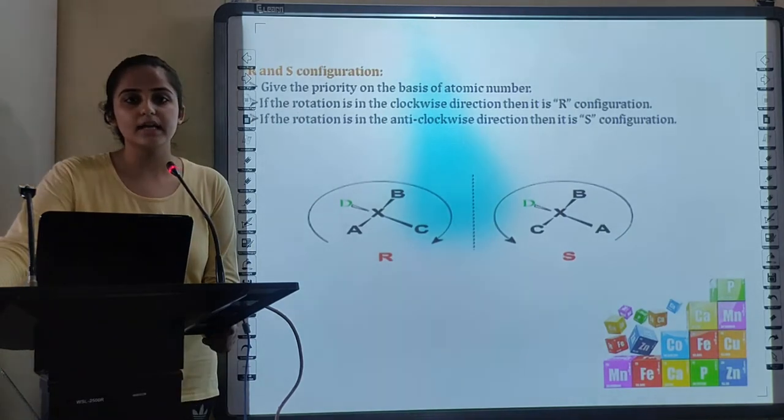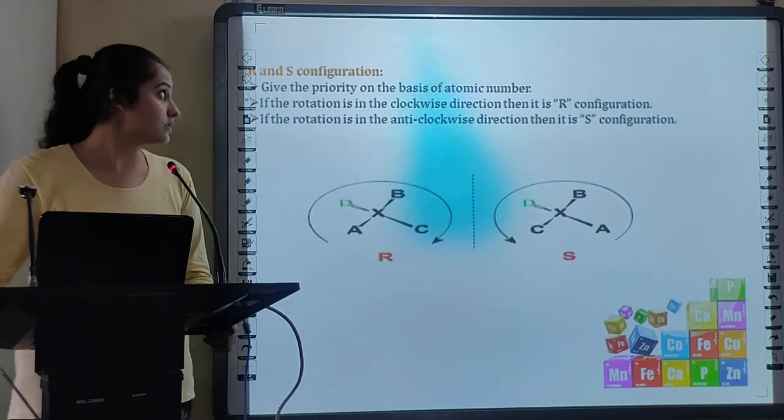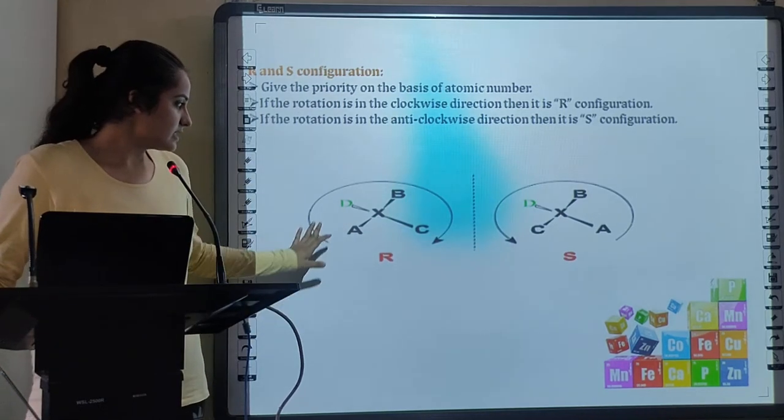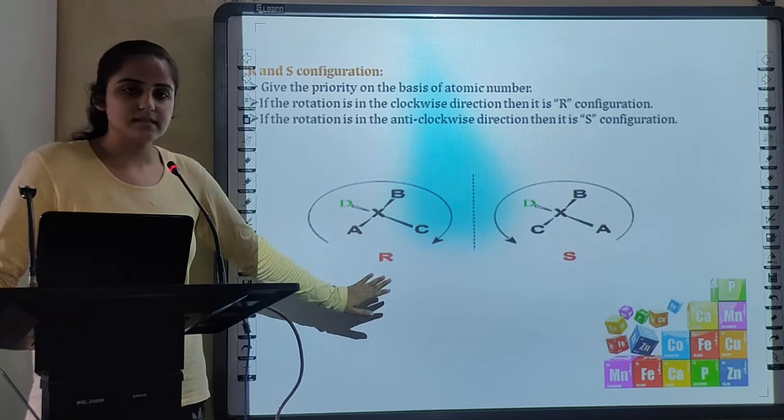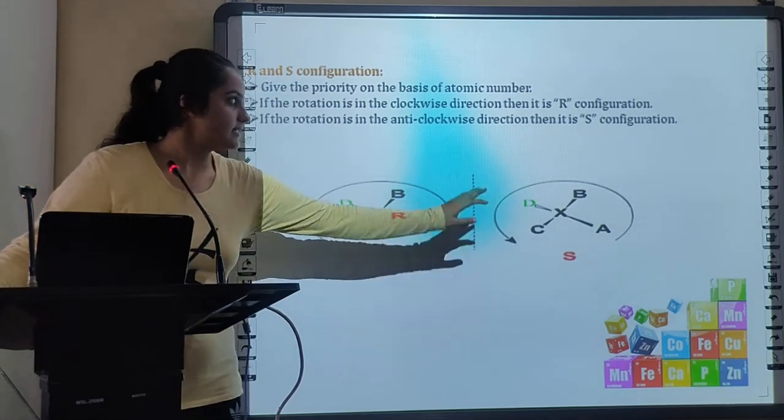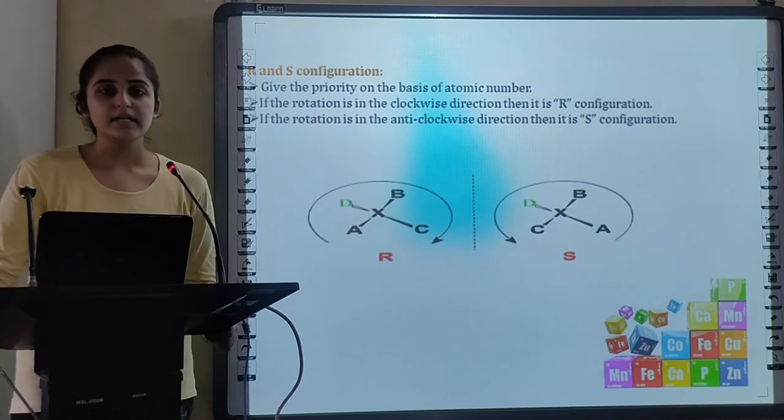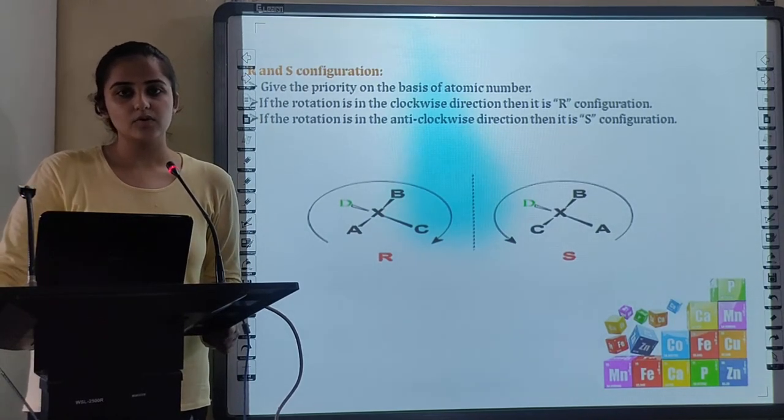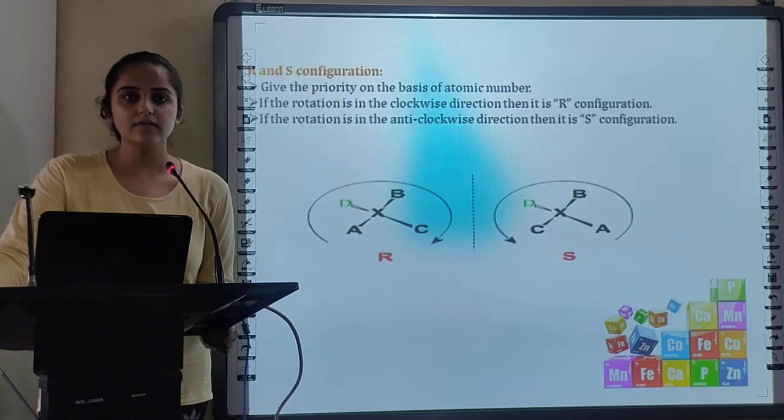Next, I will talk about R and S configuration that is Rectus and Sinister configuration. If the rotation is in clockwise direction, then it is R configuration. And if it is in anticlockwise direction, then it is S configuration. The priority is given based on atomic number, that is the atom or group with highest atomic number will get the first priority.